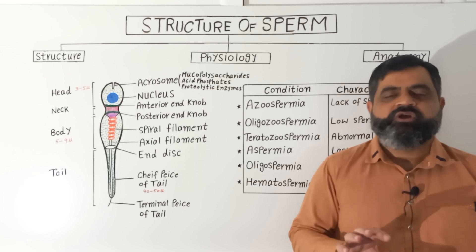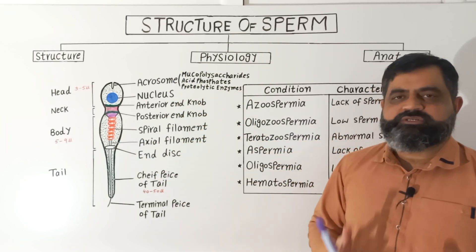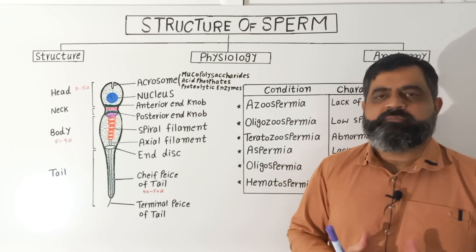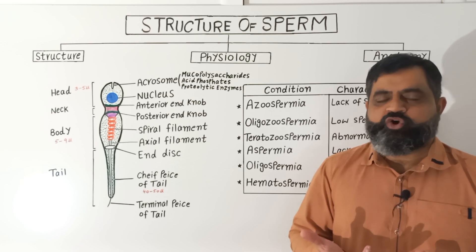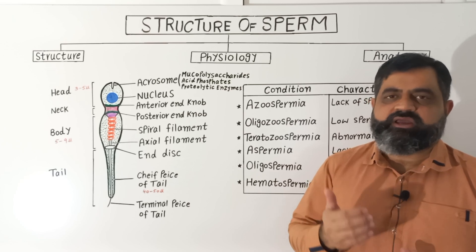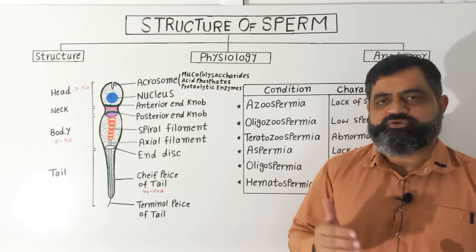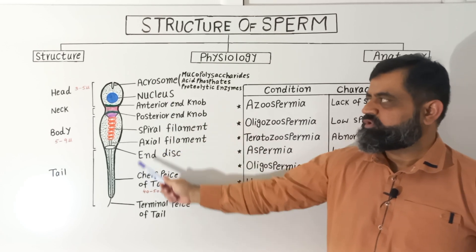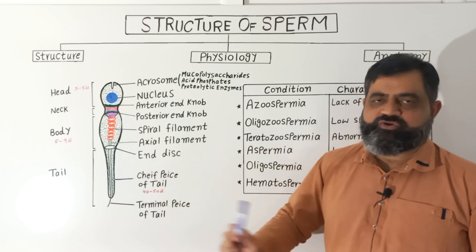A sperm is a gamete, which is a cell of the male human body. It is just like a normal cell but it has half the number of chromosomes. In humans there are 23 chromosomes in a sperm. The body of the sperm has been divided into four regions: head, neck, body, and tail.